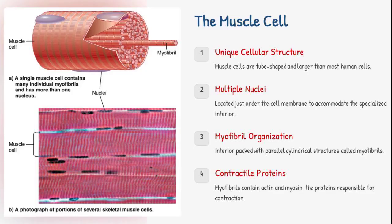Muscle cells are quite special. Unlike typical cells, they're large, cylindrical, and contain multiple nuclei positioned just under the membrane. Why? Because they're packed with myofibrils that need room to operate. And those myofibrils contain the proteins actin and myosin that actually generate force.